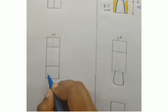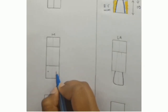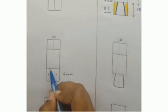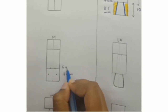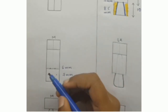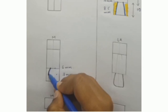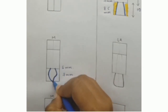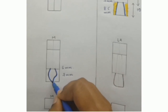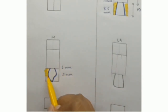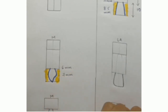Coming to the mesial aspect, we'll mark the labiolingual width of the crown, that is 7 mm, and the labiolingual width at the cervix, that is 6 mm. Now join the two points and draw the mesial outline. Then remove the excess wax from the labial and the lingual aspects.